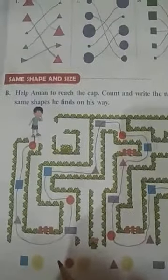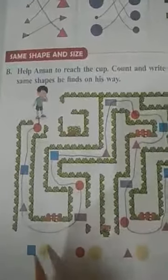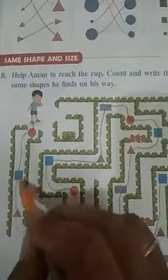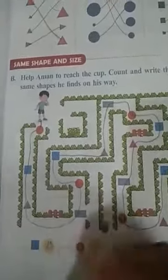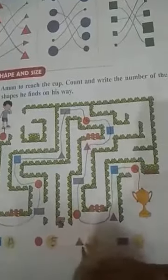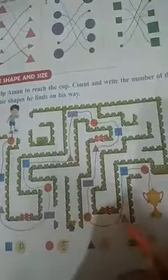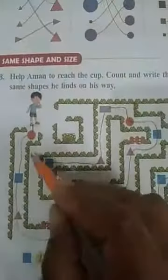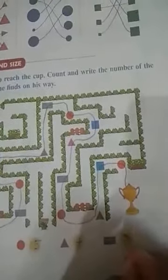Now we have to count the same shapes which we have found here on the way. First we will start with the square shape. How many squares are there? One, two, three, four. So write here four. Next one is circle. How many circles are there? One, two, three, four, and five. So write here five. Next one is triangle. Let us count: one, two, three, four. So number of triangles are four. Next one is rectangle. Let us count: one, two, three. So number of rectangles are three.